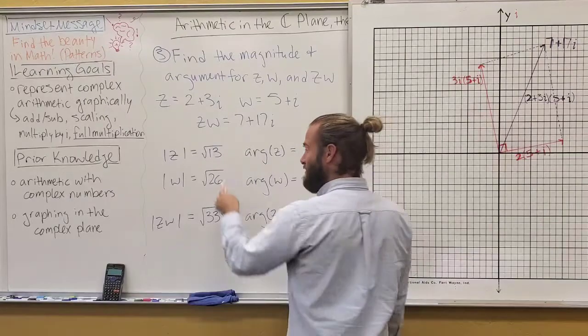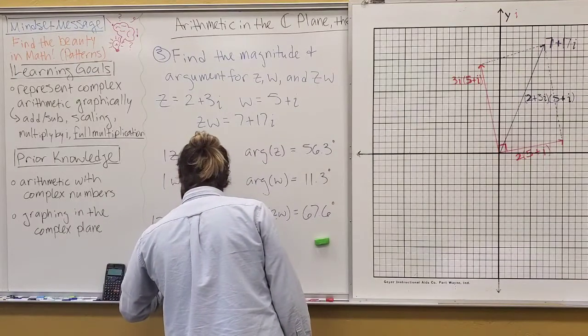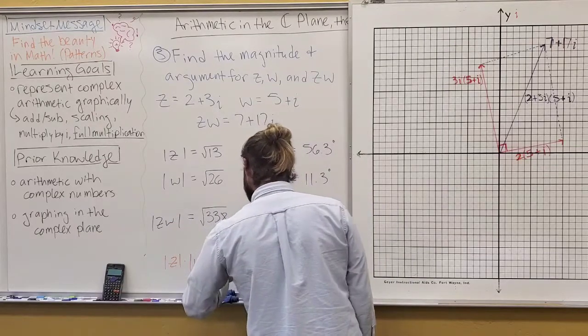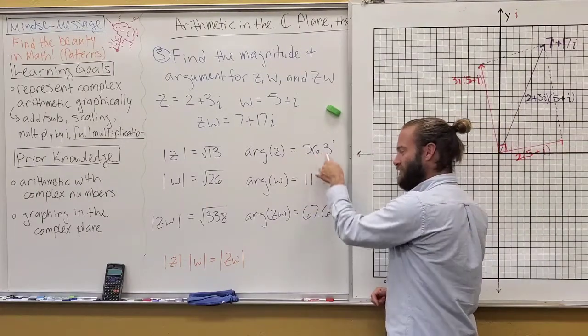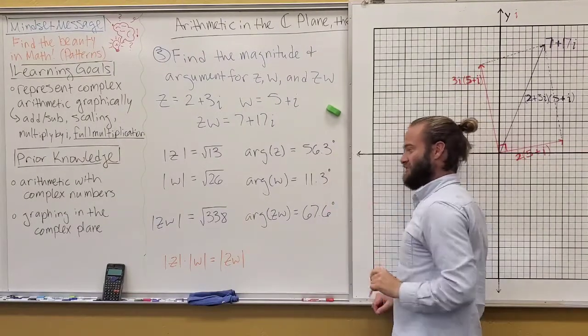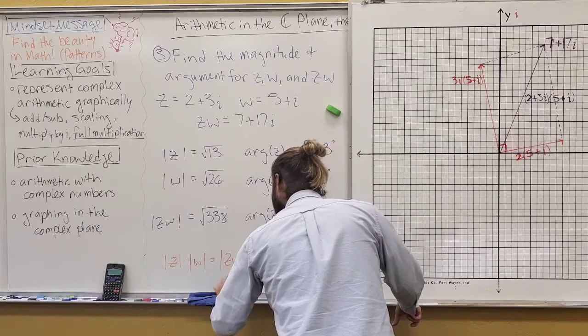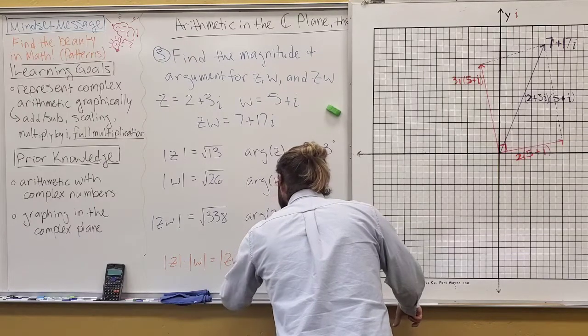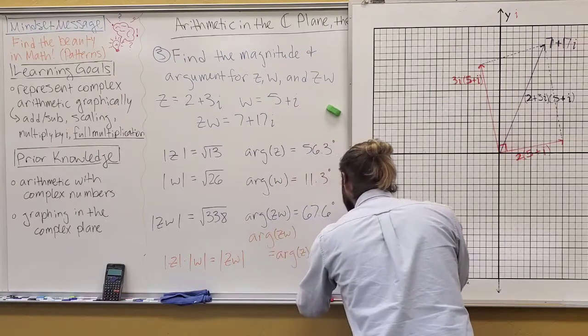So, hopefully you realize something here from looking at this, but this will lead to a really important thing. This times this. 13 times 26 is 338. And that's no coincidence. It happens to be true that the magnitude of two complex numbers, their product is the product of the magnitudes. And furthermore, if you look at the arguments, you can probably tell that this is the sum of these, I should say. So, and again, this happens to be true. The argument of ZW... Let's see if I have space here.